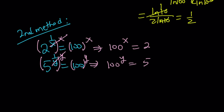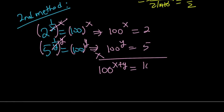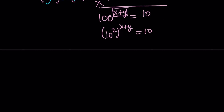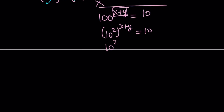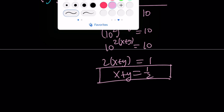Since we're looking for x plus y, we can multiply these two equations together using properties of powers: 100 to the power of x plus y equals 2 times 5, which is 10. Now, the square root of 100 is 10, and square root means something to the power of 1 half. We can write 100 as 10 squared, so 10 to the power of 2 times (x plus y) equals 10 to the power of 1. Setting 2 times (x plus y) equal to 1, we get x plus y equals 1 half.